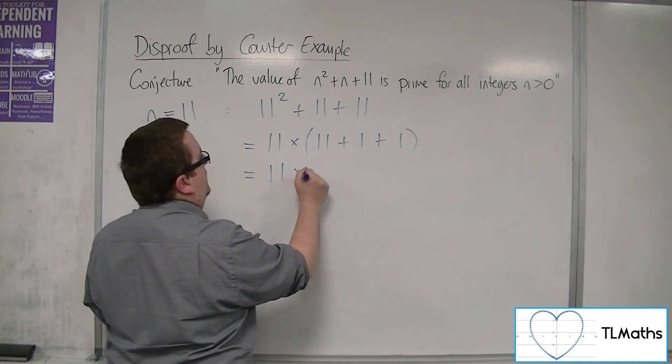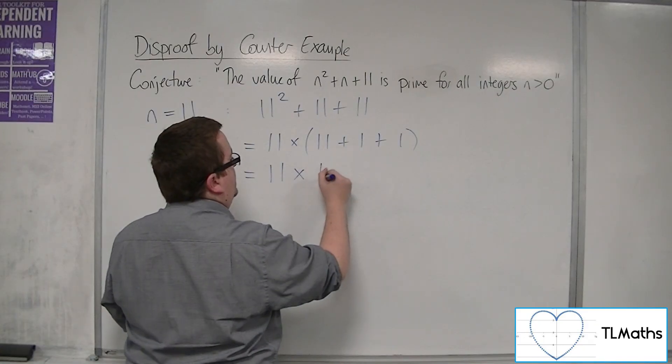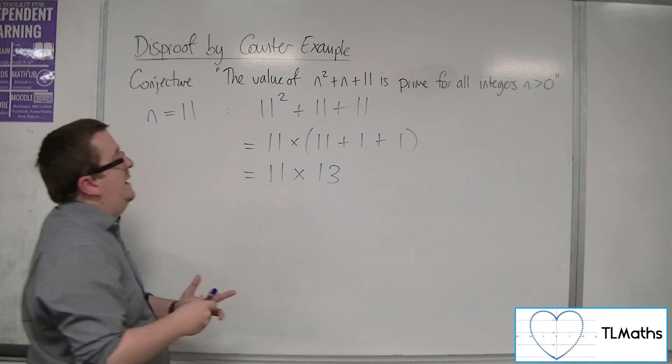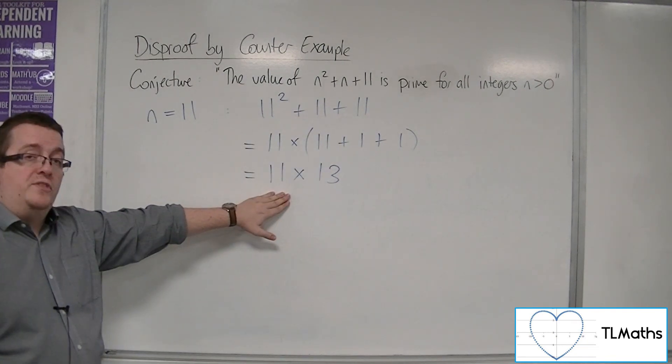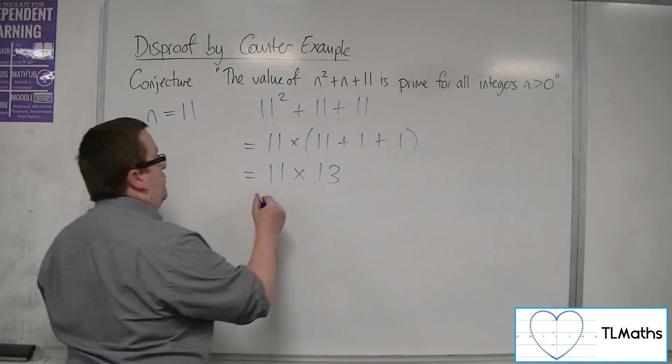Which is 11 times 13. So clearly, 11 squared plus 11 plus 11, which is 11 times 13, is not prime.